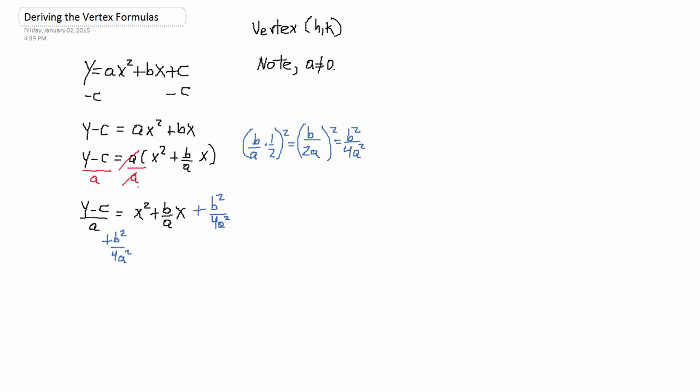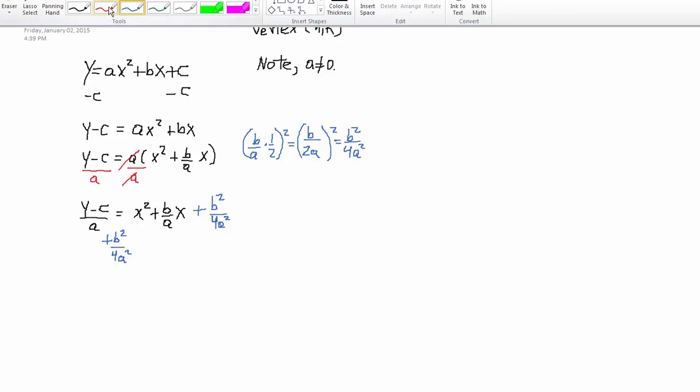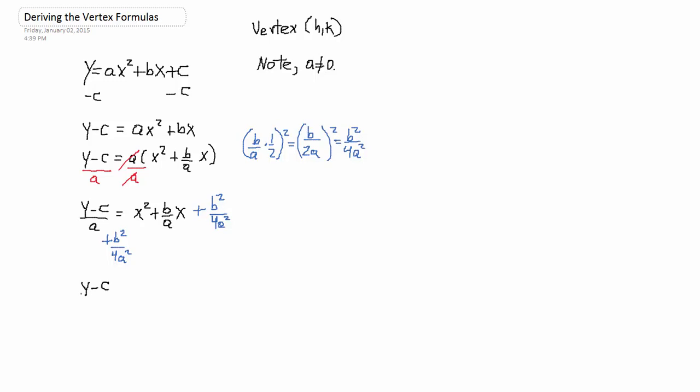Now, the next step I have to take is to rewrite it and then factor. I'm going to have Y minus C over A plus B squared over 4A squared is equal to X squared plus B over AX plus B squared over 4A squared. Now, this is a perfect square trinomial by design. Since I completed the square, so it would be X plus B over 2A.